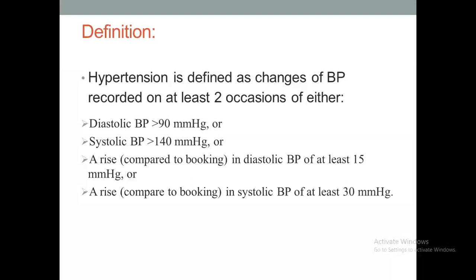For example, suppose we have a woman who is 12 weeks pregnant and her blood pressure is 100 over 60. If we re-measure it after 20 weeks gestation and the systolic is 130 — an increase of 30 mmHg — or diastolic is 75, which is 15 mmHg above baseline, this woman is considered high risk for developing hypertension in coming days.